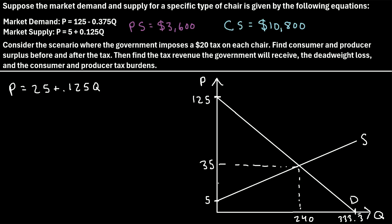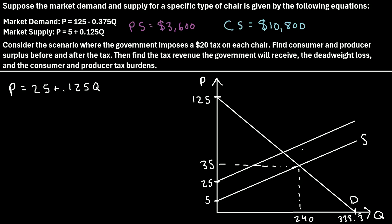Now we can go ahead and graph this line. If we plug in a 0 for quantity, P would be equal to 25, so our new market supply crosses the y-axis at 25. The new market supply line is exactly parallel to the old line, but pushed up by the amount of the tax, which is 20. At every point on the line, it increases by 20. Let's label this as supply plus tax. So now to find the new consumer and producer surplus, we're going to set this new supply equation equal to the old demand equation and solve for Q.